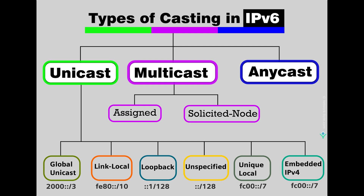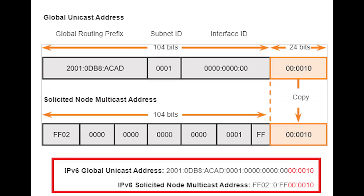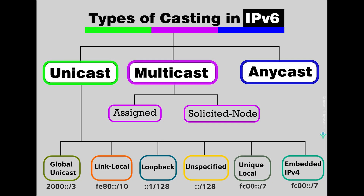When you enable IPv6 on an interface, it causes the router to create a link-local IPv6 address and also compute and join the solicited node multicast group address. A solicited node address is created by taking the least significant 24 bits of a unicast or anycast address and appending them to the prefix FF02.